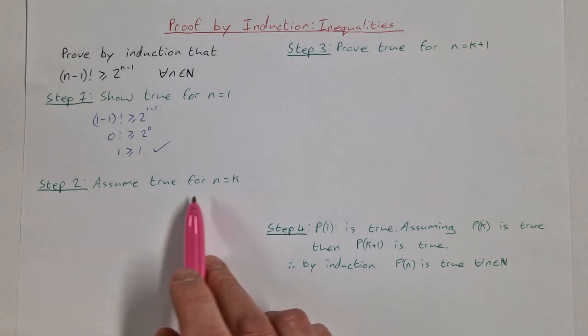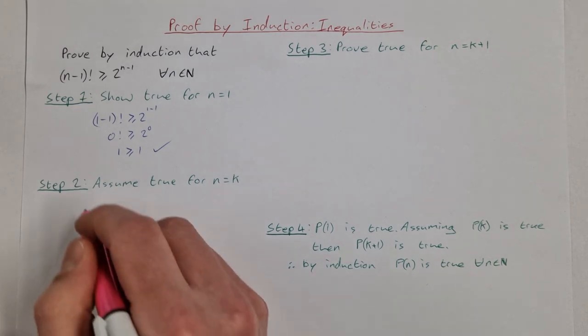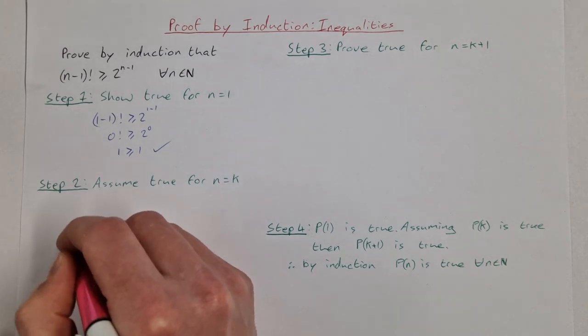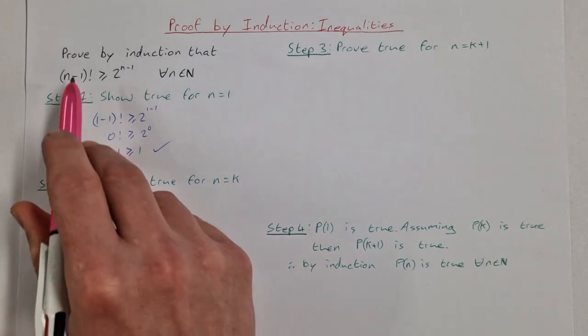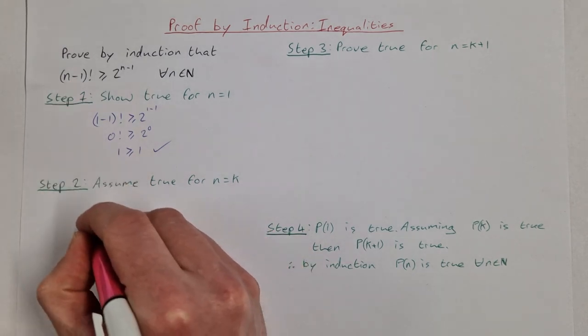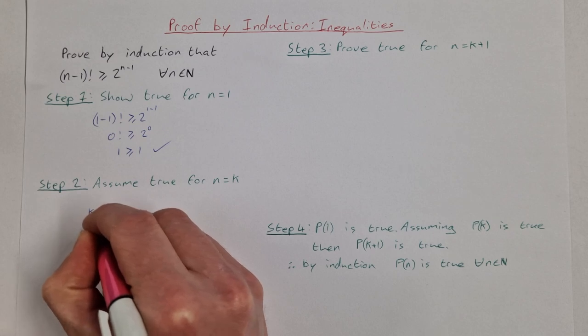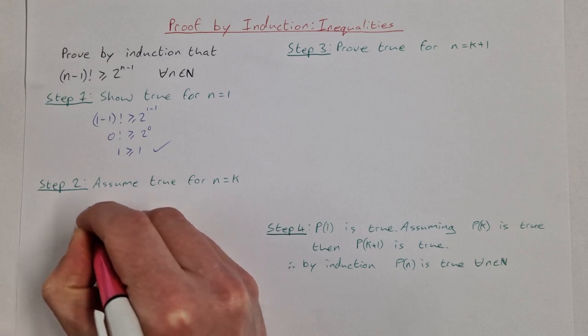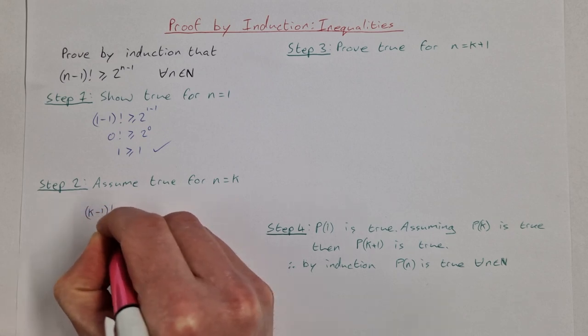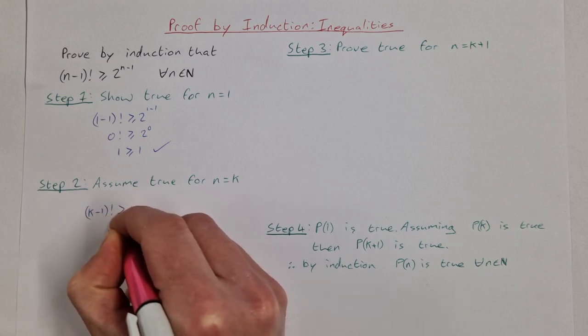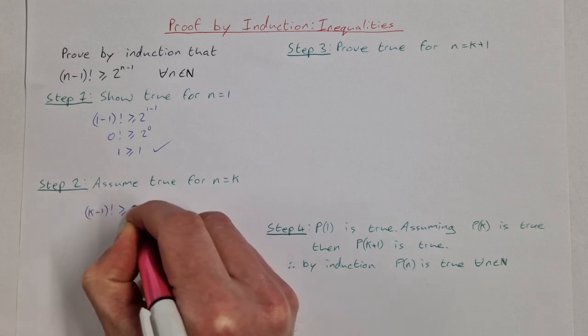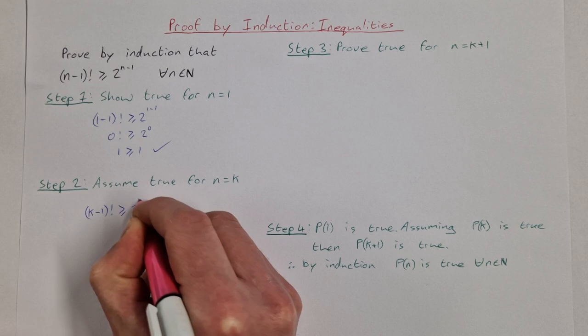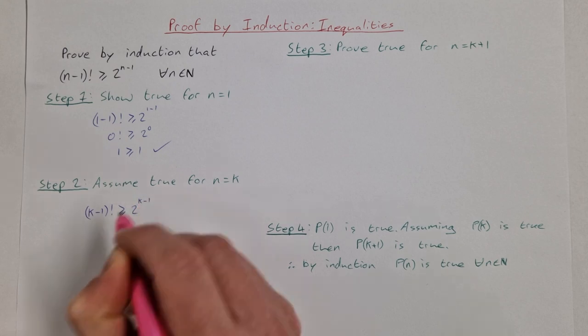Step 2: we assume true for n = k. So substituting k instead of n, we have (k-1)! ≥ 2^(k-1).